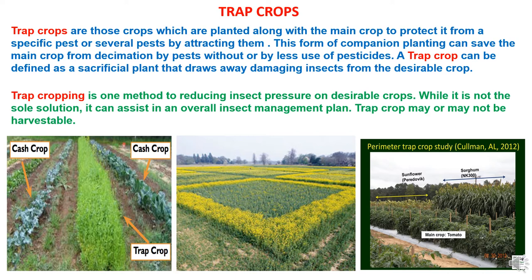First, an introduction to Trap Crops. Trap crops are those crops which are planted along with the main crop to protect it from a specific pest or several pests by attracting them. This form of companion planting can save the main crop from decimation by pests without or with less use of pesticides. A trap crop can be defined as a sacrificial plant that draws away damaging insects from the desirable crop. Trap cropping is one method of reducing insect pressure on desirable crops.